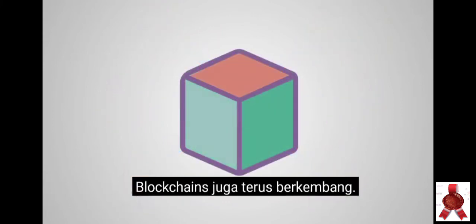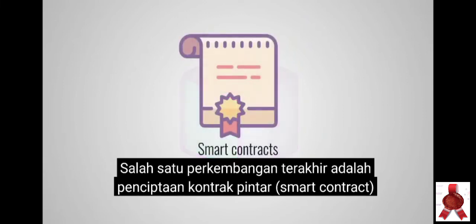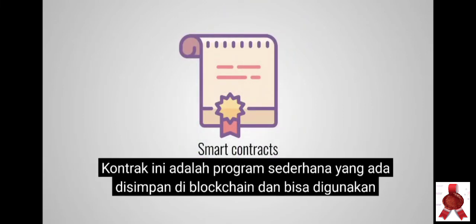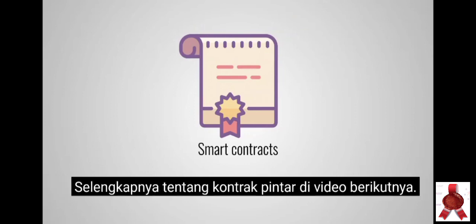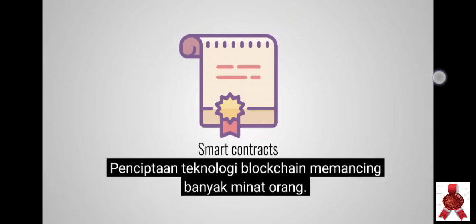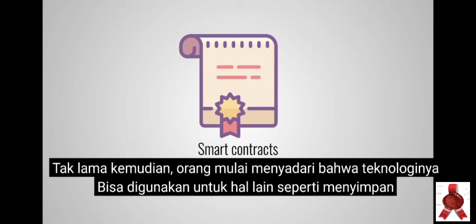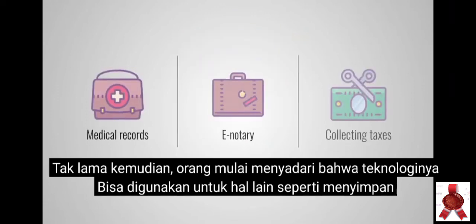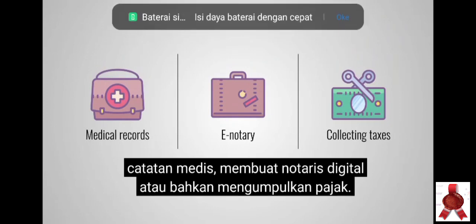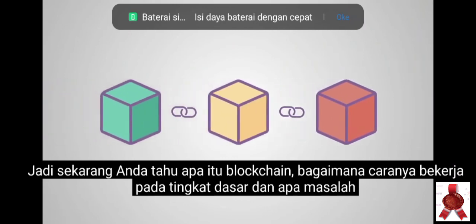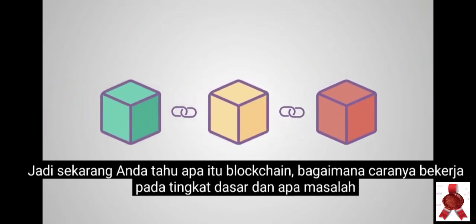Blockchains are also constantly evolving. One of the most recent developments is the creation of smart contracts — simple programs stored on the blockchain that can be used to automatically exchange coins based on certain conditions. The creation of blockchain technology piqued a lot of people's interest. Soon others realized it could be used for other things like storing medical records, creating a digital notary, or even collecting taxes. So now you know what a blockchain is, how it works on a basic level, and what problems it solves.